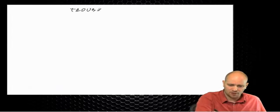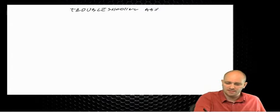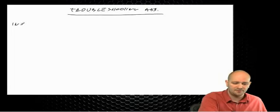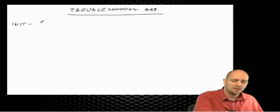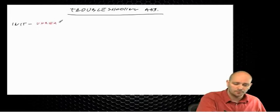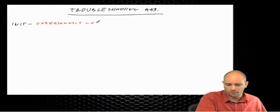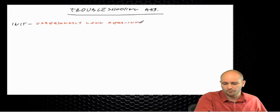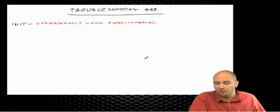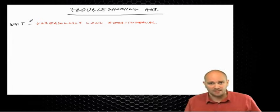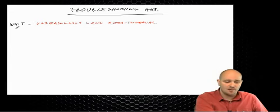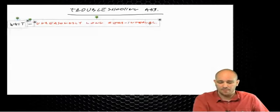If a router is stuck in the wait state for an unreasonably long time, look at the dead interval — that would be the number one reason. Remember, the dead interval on non-broadcast network types is two minutes, so on those networks the wait state naturally lasts longer.